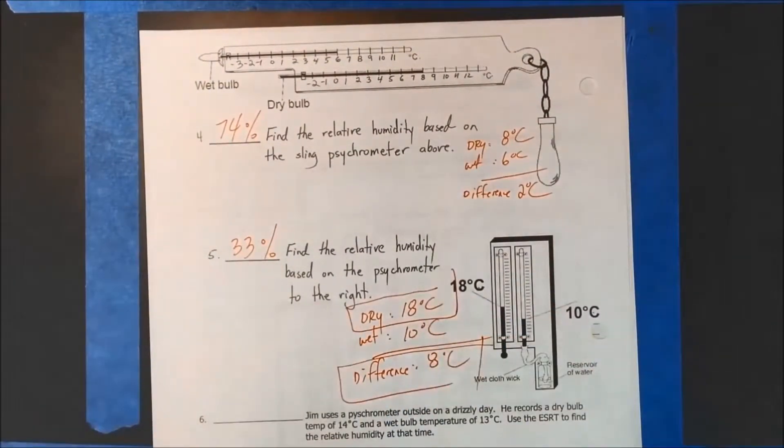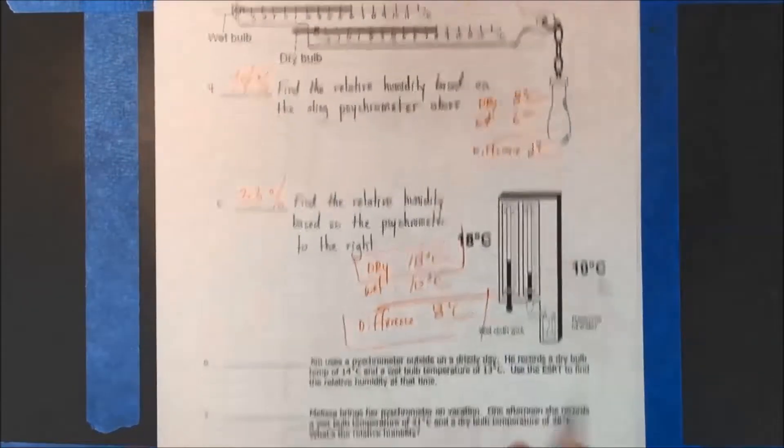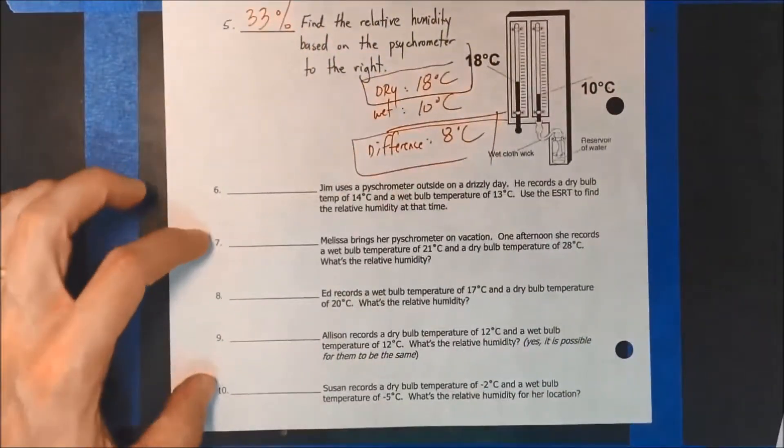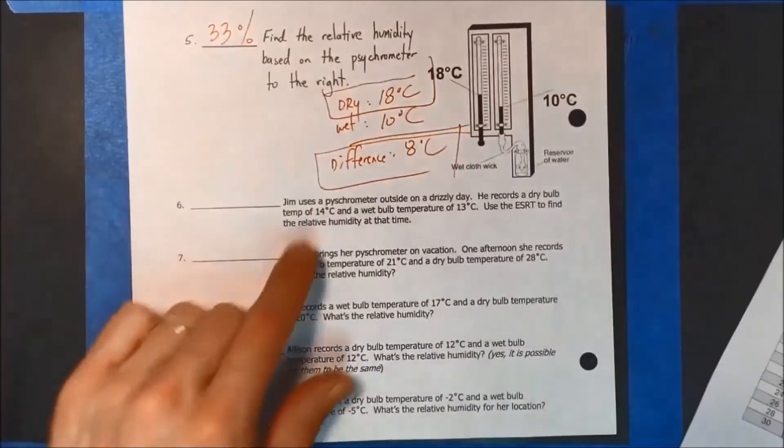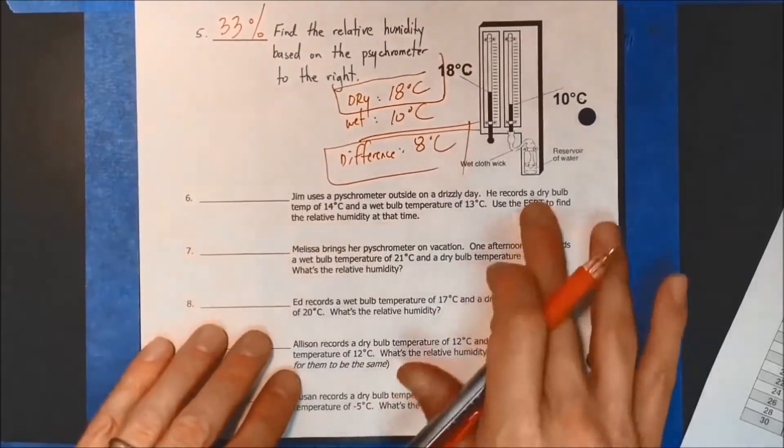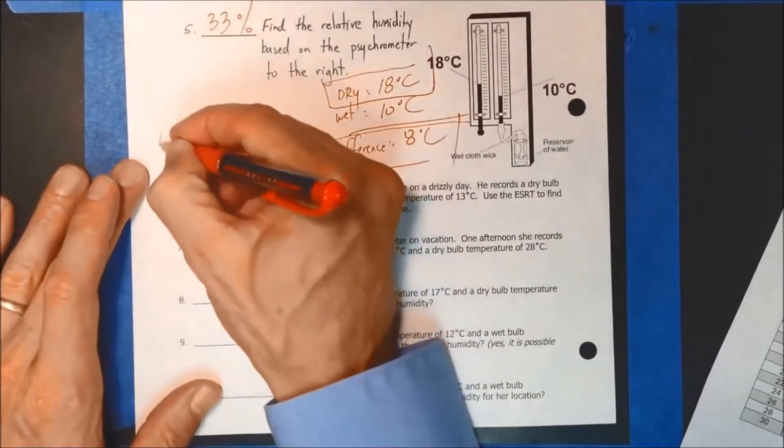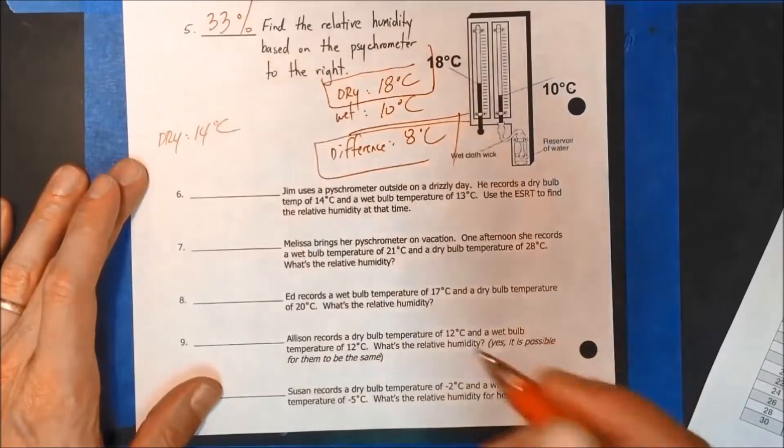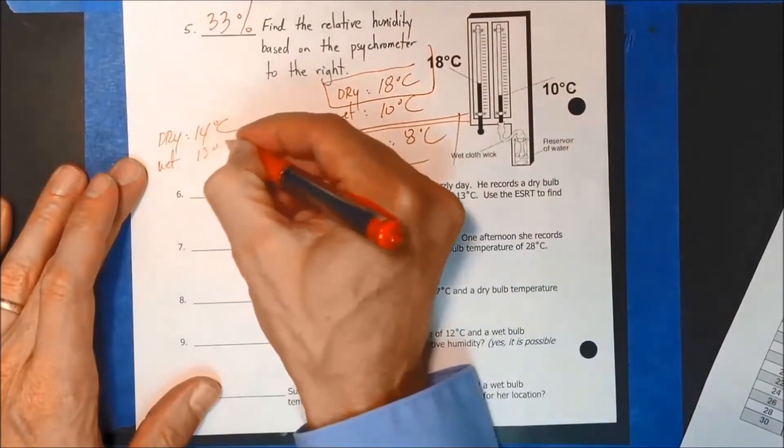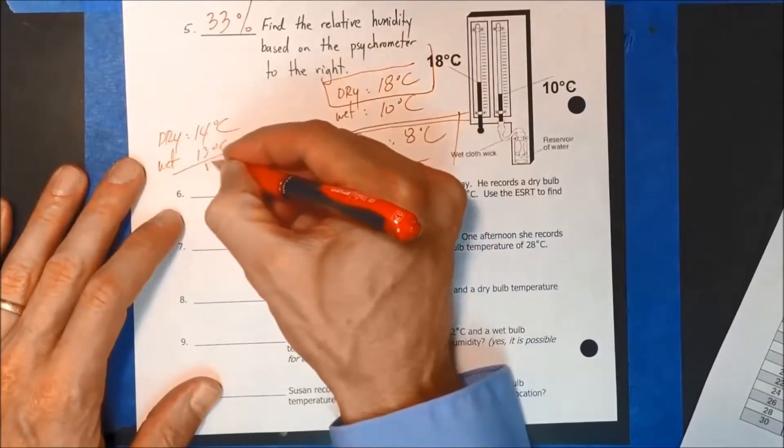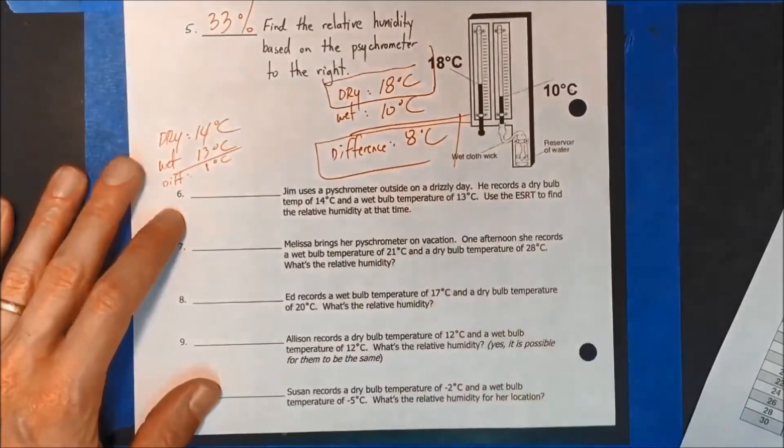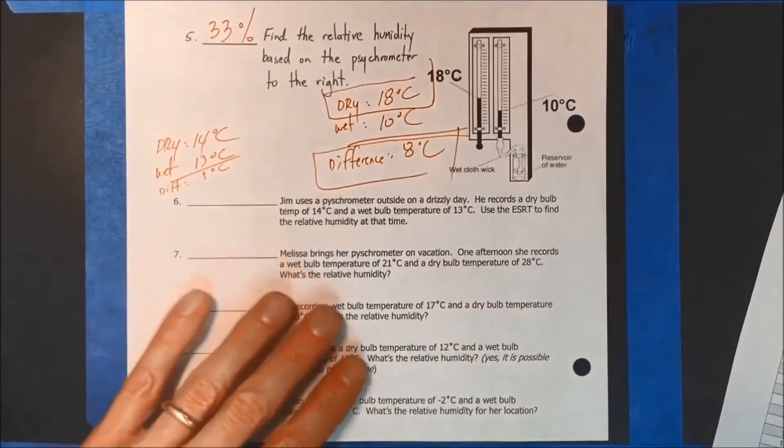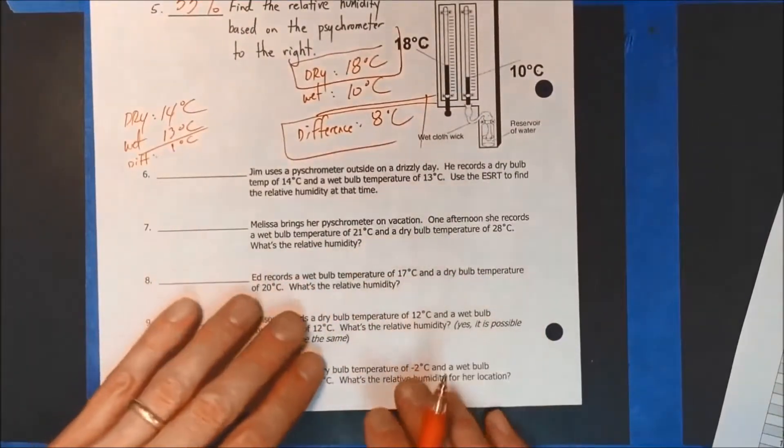So I did those five. It's very similar for all of these right here. So do these five right here on your own. And I'll do one more. I'll do six. And then you have to do these four. Okay. So six. You go like this. Jim uses a psychrometer outside on a drizzly day. He records a dry bulb temp of 14 and a wet bulb of 13. I'm going to write it right here. Dry of 14 degrees C and a wet bulb of 13 degrees C. Therefore the difference, sorry the difference I have run out of space here. Difference is one degree C. So here we go.